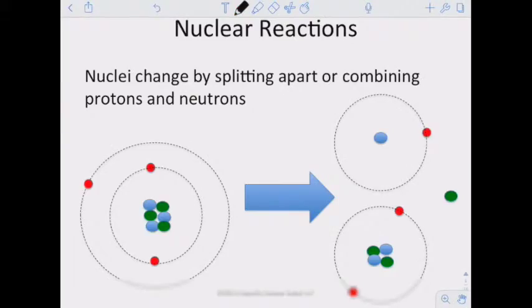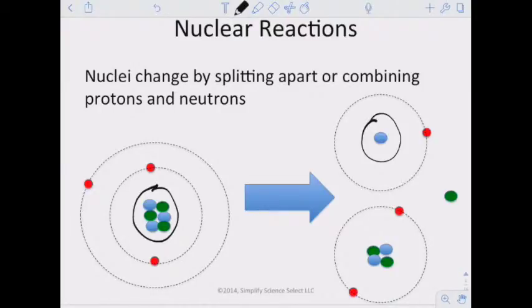Now let's talk about a nuclear reaction. The nuclei change by splitting apart or combining protons and neutrons. The main difference between a chemical reaction and a nuclear reaction is that a nuclear reaction involves the nuclei, it involves the protons and neutrons in the nucleus, and it involves breaking those apart. Chemical reaction, we're just dealing with electrons. In a nuclear reaction, we are dealing with the nucleus.